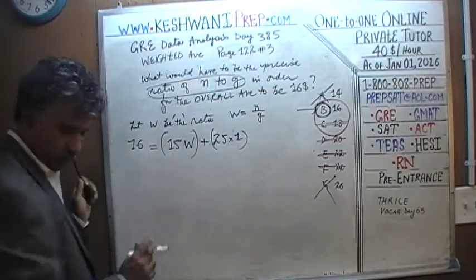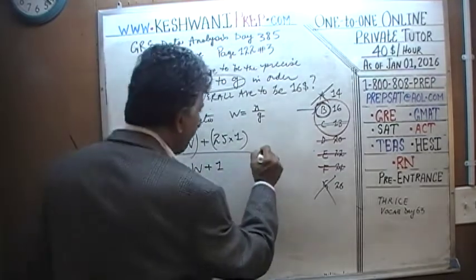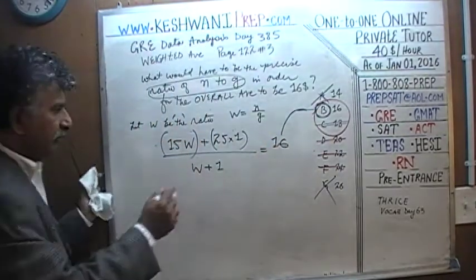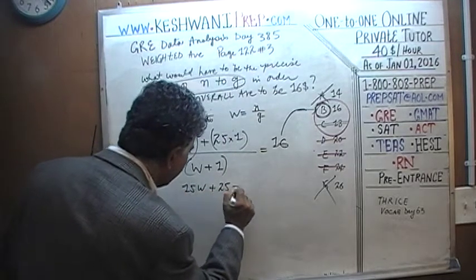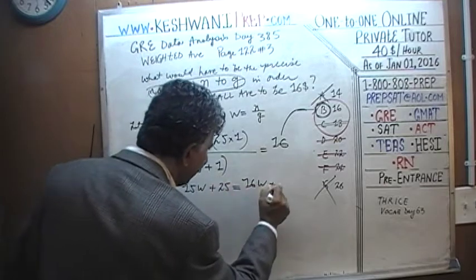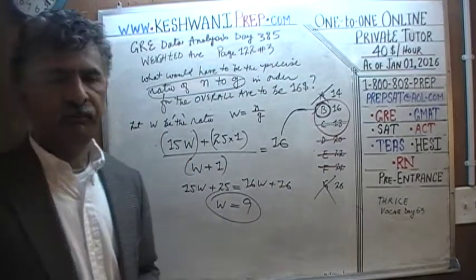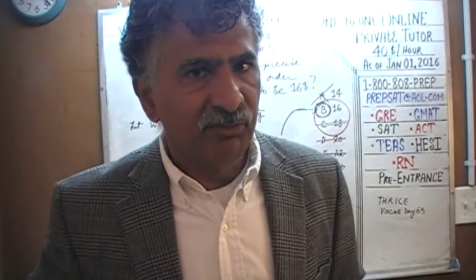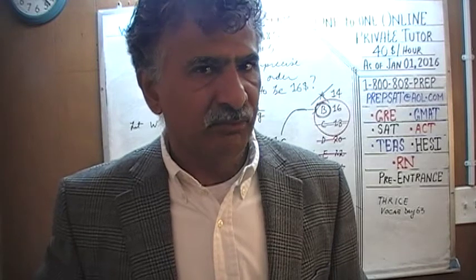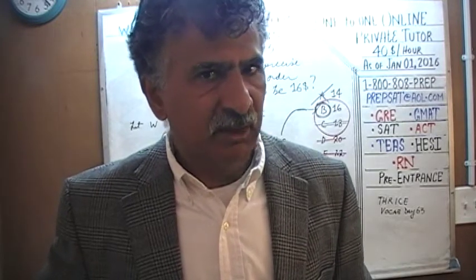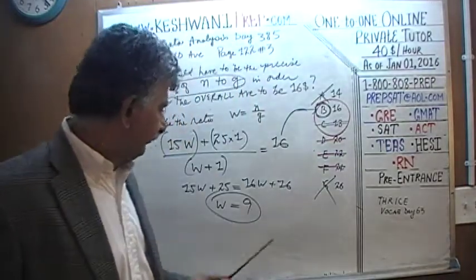Multiplying both sides by (W + 1): 15W + 25 = 16W + 16. Bringing terms together: W = 25 − 16 = 9. So the ratio has to be 9 to 1 — there must be 9 non-graduates for every 1 college graduate in the firm.